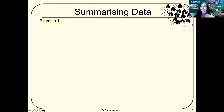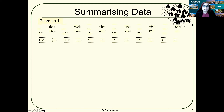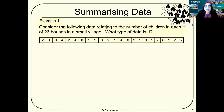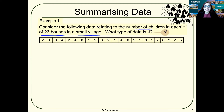To understand this, let me take an example. Let's consider the following data relating to the number of children in each house. We have 23 houses in a small village and we're going to collect data about the number of children in each house. What type of data is this? It's discrete quantitative data.